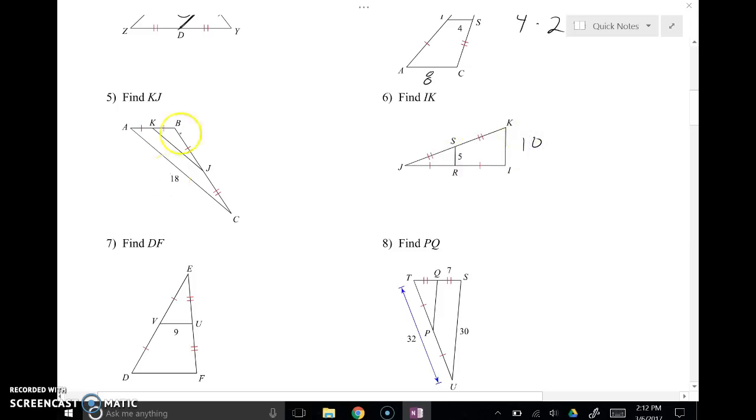KI would be 10. KJ would be 9. All right? And we can make it more complicated from here. But again, you're still using this idea that the mid-segment is half the length of the corresponding side.